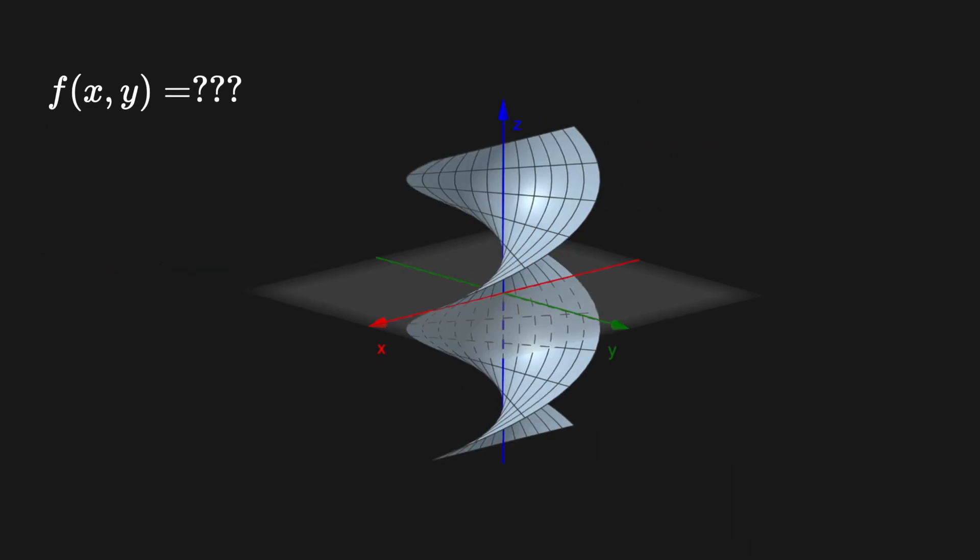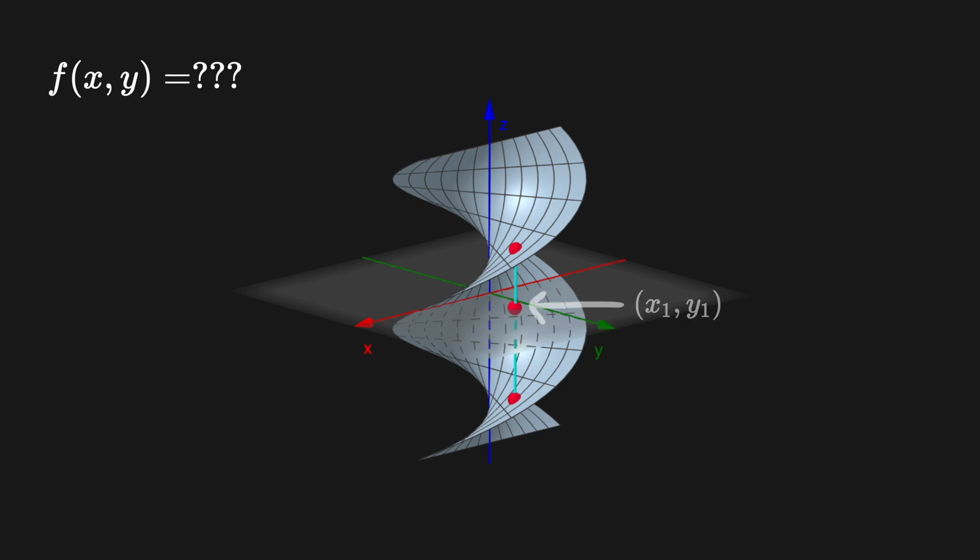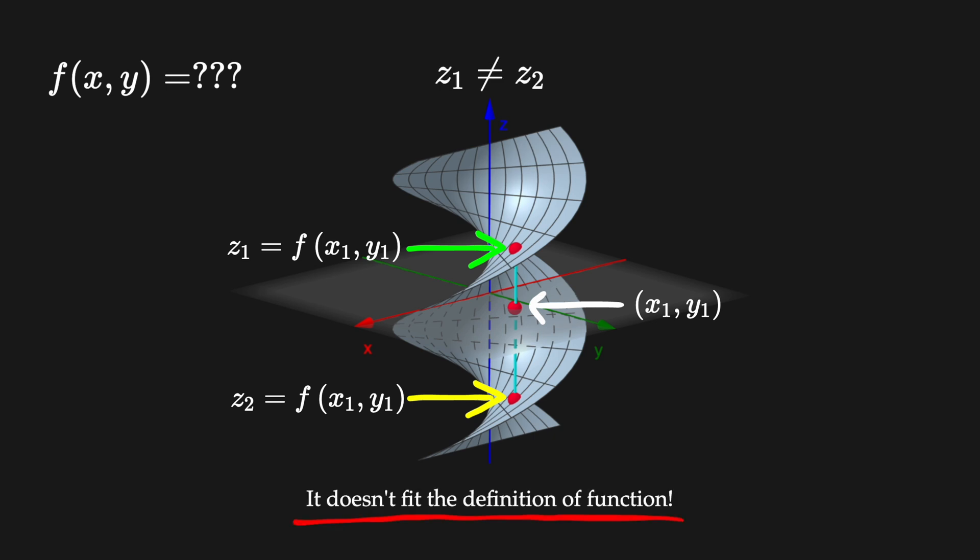For this particular example, let's consider a point x1 comma y1 on the plane. When the function is applied, we obtain two values z1 and z2 which are different. So in fact there is no function because this behavior does not fit the definition of function.